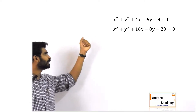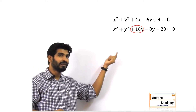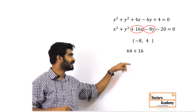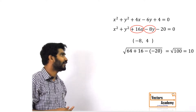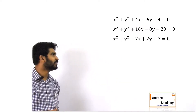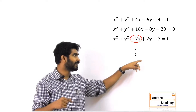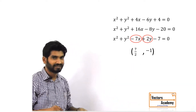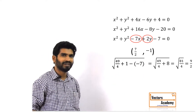Next question: x² + y² + 16x - 8y - 20 = 0. The center is (-8, 4) and the radius is √(64 + 16 + 20) = √100 = 10. One more question: x² + y² - 7x + 2y - 7 = 0. The x-coordinate of the center is 7/2 and the y-coordinate is -1. So the center is (7/2, -1) and the radius is √(49/4 + 1 + 7) = 9/2.